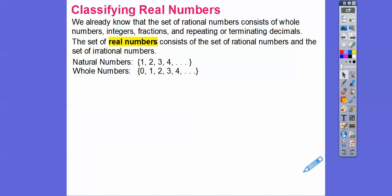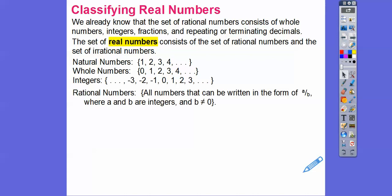Then negative numbers came into the picture. So integers are all the whole numbers and all the negative whole numbers — from negative infinity to positive infinity, but they're integers, the counting numbers and all the negative counting numbers. Then we started dealing with fractions and decimals, so those were called rational numbers.